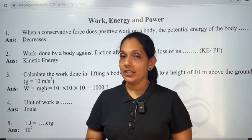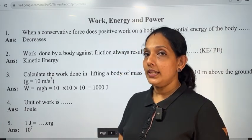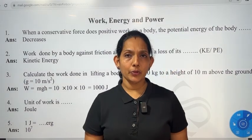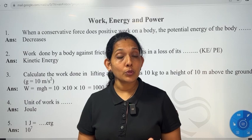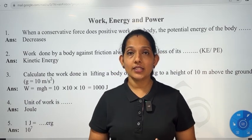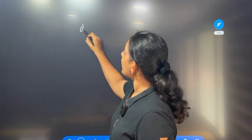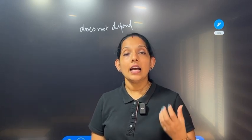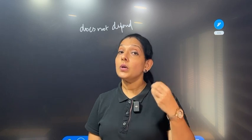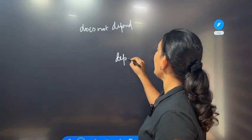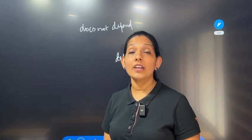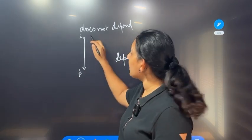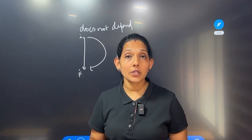So we will learn a little bit about work, energy, and power. When a conservative force does positive work on a body, the potential energy of the body decreases. What is conservative force? Conservative force does not depend on the path — the work done by the force depends only on the initial and final positions, not on the path.